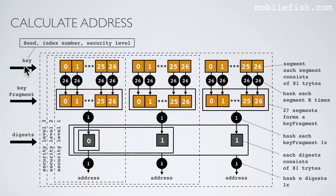The key, also known as the private key, is generated using the seed, index number and security level. The index number is an integer and every address has a corresponding index number, which means address 0 has index number 0, address 1 has index number 1, address 3 has index number 3, etc. This is the generated key.